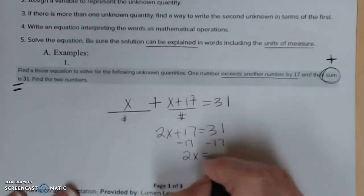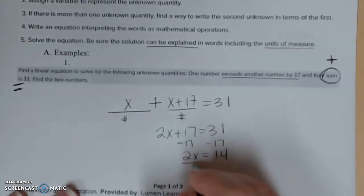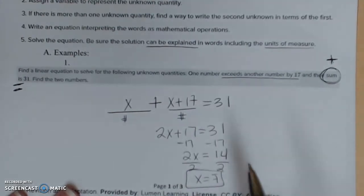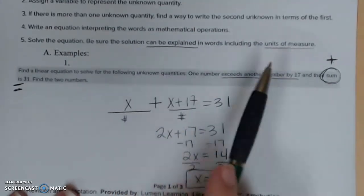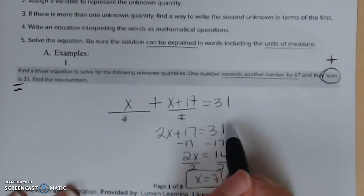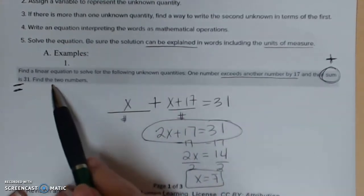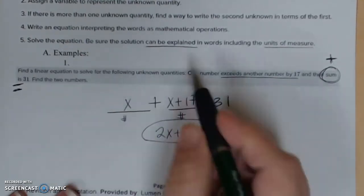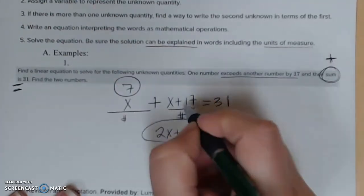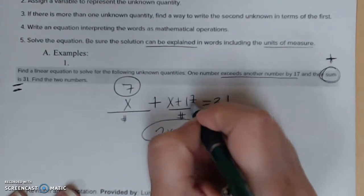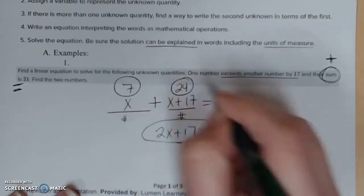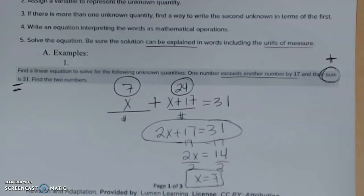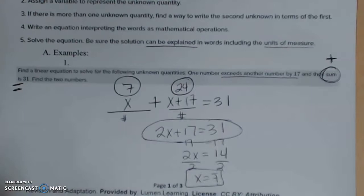So it gives me 2x equal to 14 divide. So x gives me 7. Okay I'm done. Let me go on. No. Last important step. Can it be explained in words using the units of measure? This said find a linear equation to solve the following unknowns. There's that linear equation. Find the two numbers. So if x is 7 that means my first number is 7. Plug 7 in here and then 7 plus 17, that gives me 24. Now I have fully answered the question. I have all three parts to my answer and I'm going to get full credit for this problem.